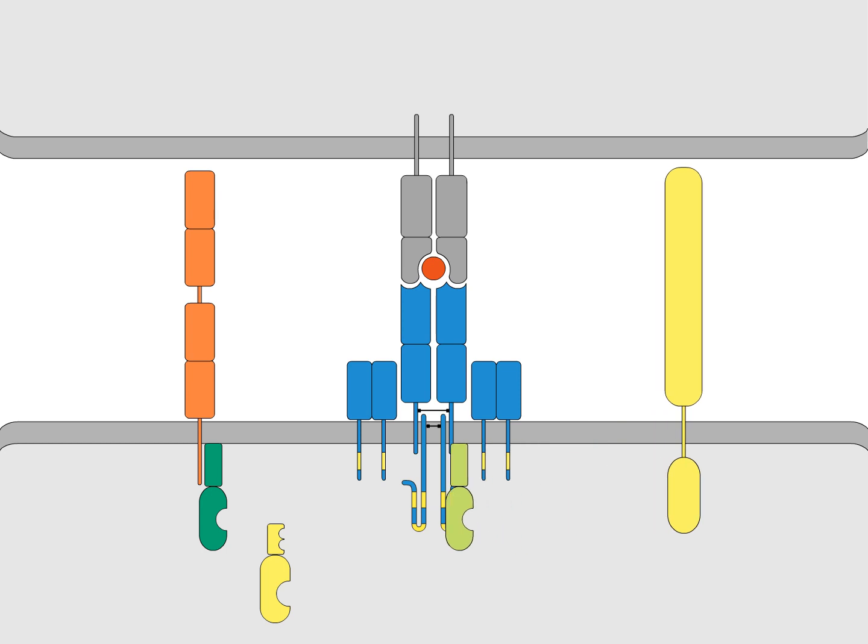The activated fin kinase then phosphorylates the ITAMs of the T-cell receptor CD3 components. The phosphorylated ITAMs are binding sites for a second kinase, ZAP70, which can now bind to the phosphorylated zeta chain.